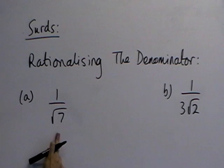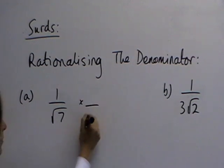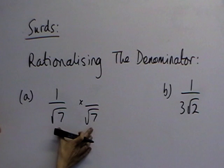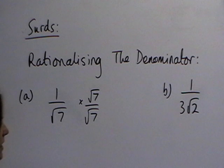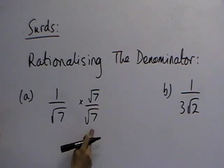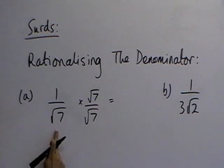So if we multiply the bottom by root 7, then that will get rid of the surd. But we have to multiply the top and the bottom by the same thing, because that is the equivalent of multiplying by one. So to rationalize the denominator, we just multiply the top and the bottom by root 7.